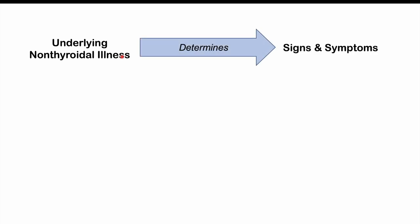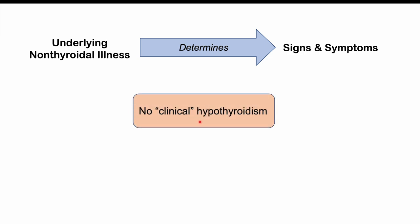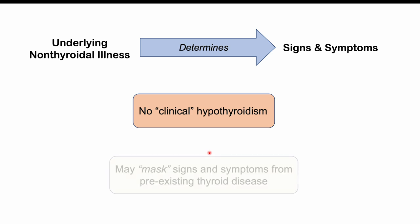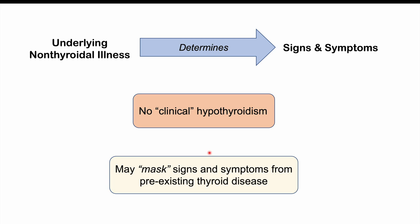There are no characteristic findings specific to euthyroid sick syndrome itself. The underlying non-thyroidal illness — whether pulmonary, cardiovascular, or another condition — determines the signs and symptoms seen in the patient. Even with disrupted or low thyroid hormones, there is no clinical hypothyroidism in these cases. However, changes in blood levels of thyroid hormones may actually mask signs and symptoms of a pre-existing thyroid disease. Overall, euthyroid sick syndrome is found on blood work as a disruption of thyroid hormone levels due to some other underlying condition.